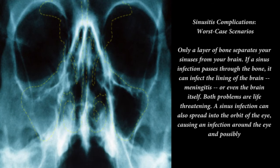Sinusitis complications — worst-case scenarios: only a thin layer of bone separates your sinuses from your brain. If a sinus infection passes through the bone, it can infect the lining of the brain — meningitis — or even the brain itself. Both problems are life-threatening. A sinus infection can also spread into the orbit of the eye, causing an infection around the eye.